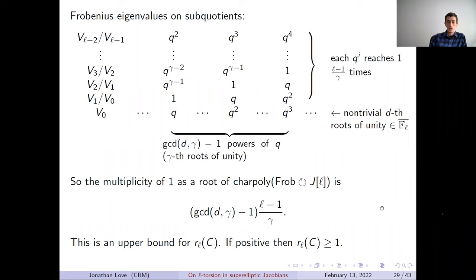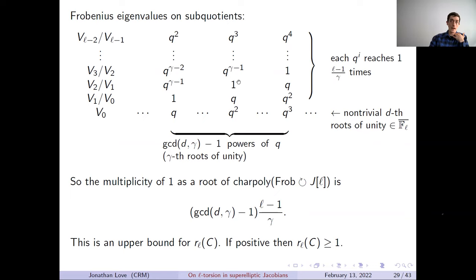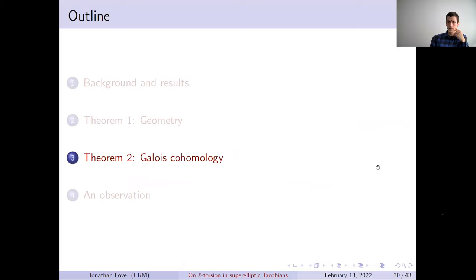The issue to address next is that algebraic multiplicity does not equal geometric multiplicity. An element could look like a 1-eigenvector in V_j mod V_{j−1} but not actually be a true eigenvector in V_j — when you apply Frobenius, you could get itself plus some element of V_{j−1}. This is the obstruction we need to address for the proof of Theorem 2, determining whether the action of Frobenius on the L-torsion is semisimple.